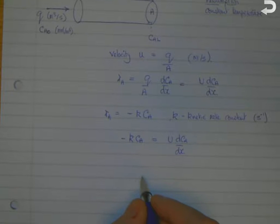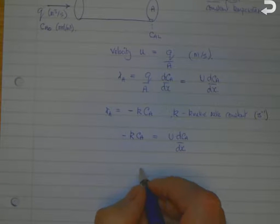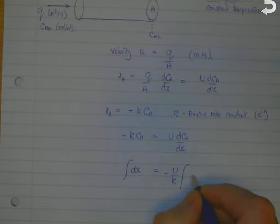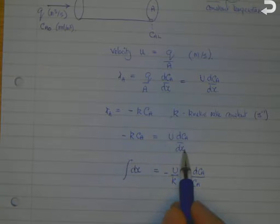If we assume that, we can then do the integrations. Take dx to the left-hand side and we'll take the K over to the right-hand side. So that's minus u over K, and this is dC_A over C_A. So we've taken K C_A over to that side, we're taking dx over to that side, so we've now got an integration. Now we need to set some limits.